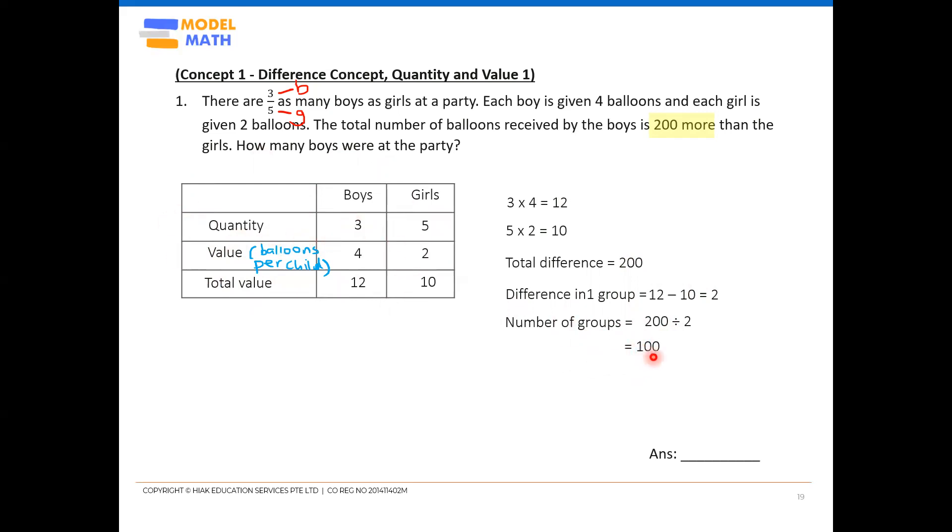Once you get the number of groups already, we read back the final question to see what we need to find. We want how many boys? We want the number of boys. We ask ourselves the same question: how many boys, but this time we ask ourselves for one group. In one group, how many boys are there? How many boys? We look at the quantity, not the value, not the total value. The number of boys, we look at quantity. Now one group, I see three boys. However, since I know there are 100 groups, I have to take 100 times three to get the actual number of boys at the party.